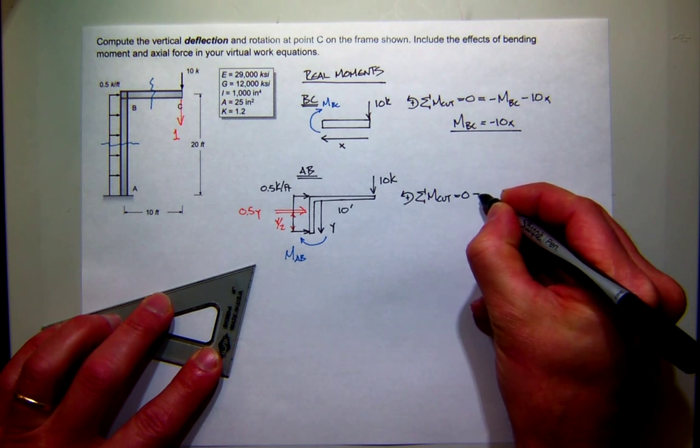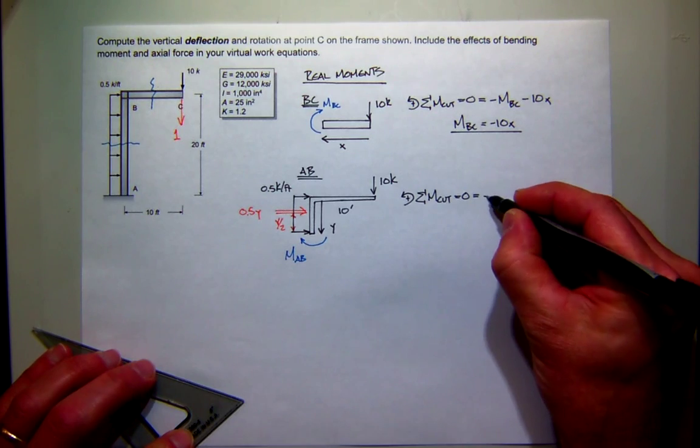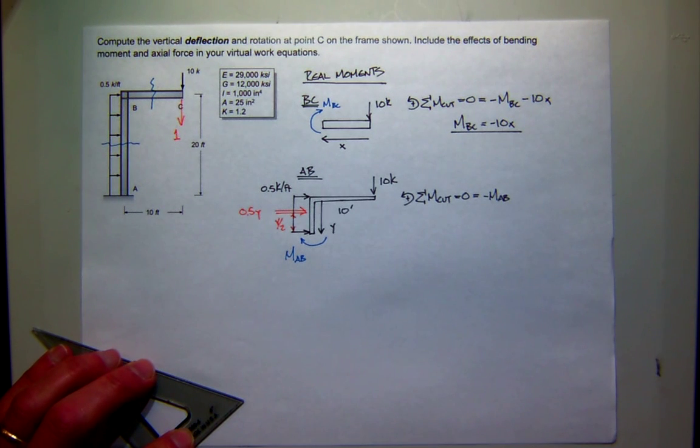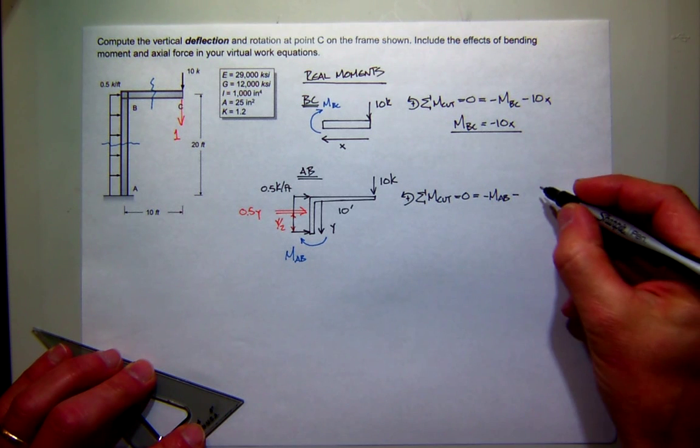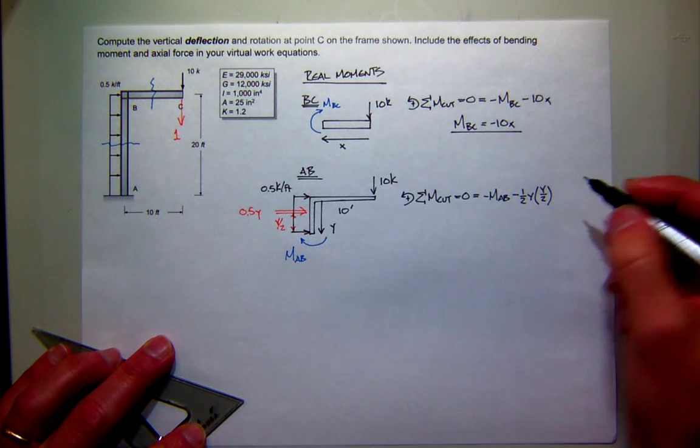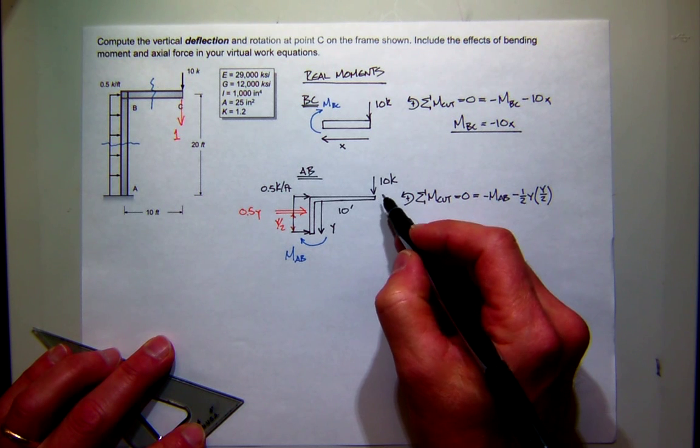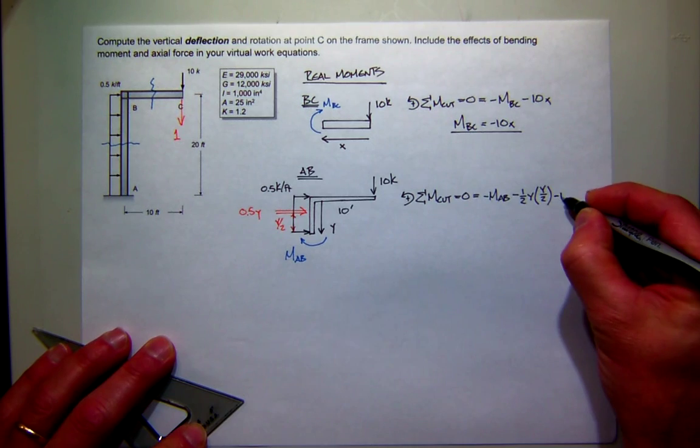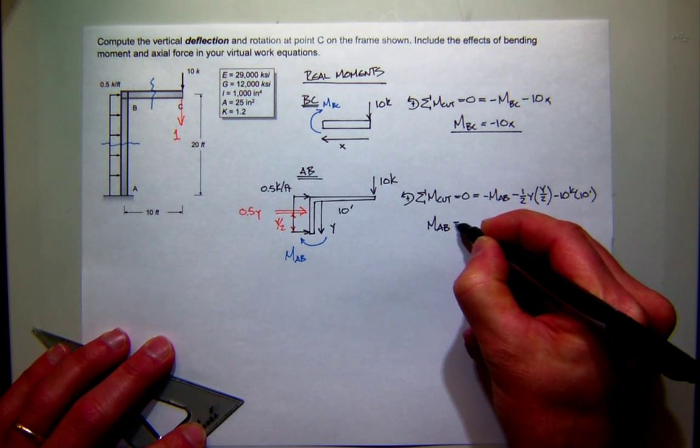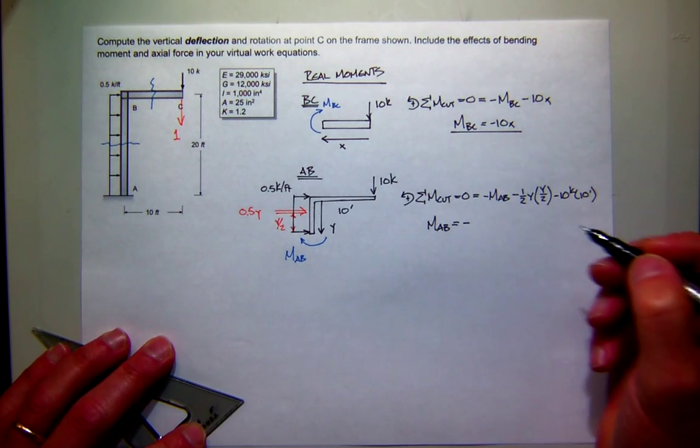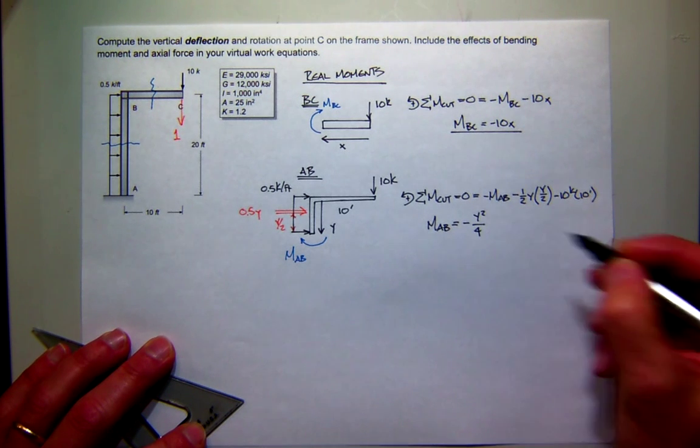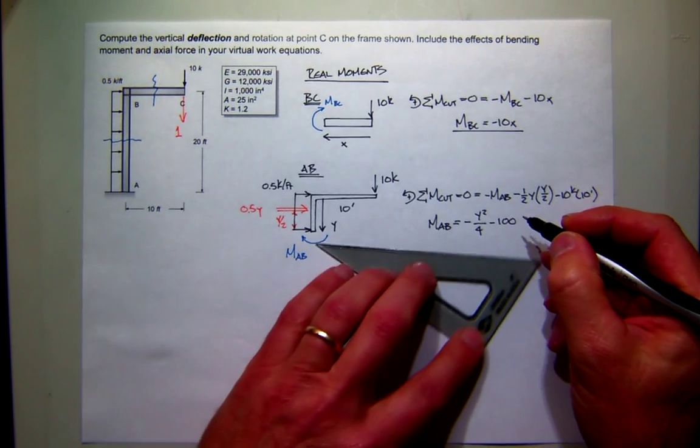We're going to sum moments at the cut. So the distance here is Y over 2. With all that stuff nicely marked out, we can simply just sum moments of this chunk of the structure at the cut. This moment is positive or negative? Negative. The moment caused by this concentrated equivalent force that represents the distributed load, positive or negative? Negative. So the force is 0.5Y, and then the moment arm is Y over 2. And then I've got this 10 kip force. So it's 10 kips times 10 feet. Is that positive or negative? Negative. So what is our moment in AB? It looks like Y squared over 4, right? Negative. And then minus 100. So that wasn't so bad.